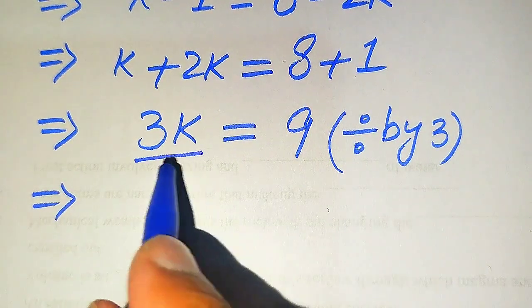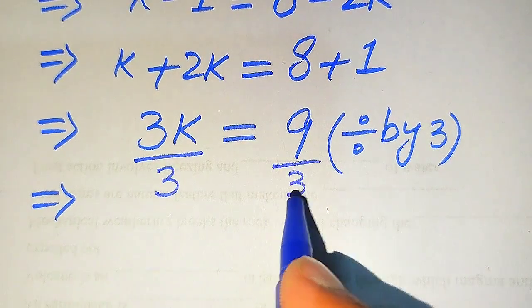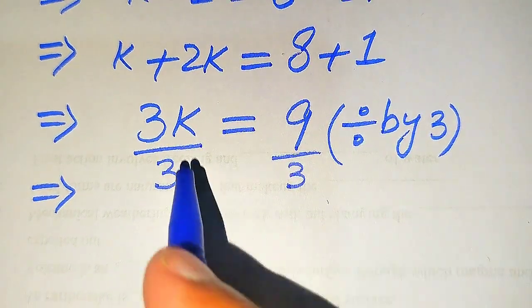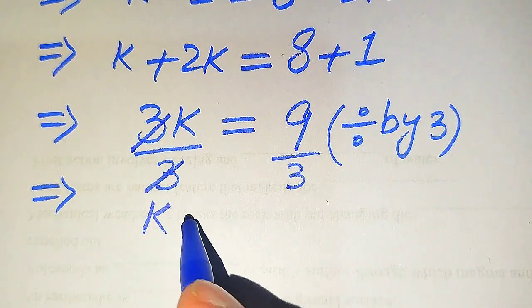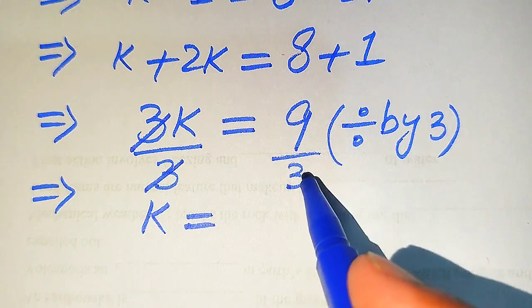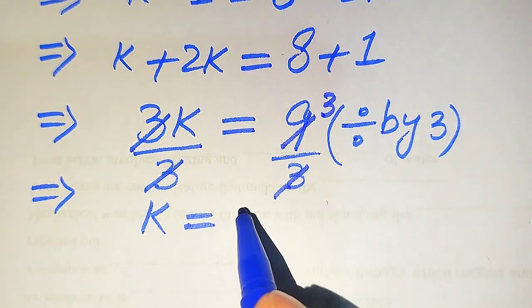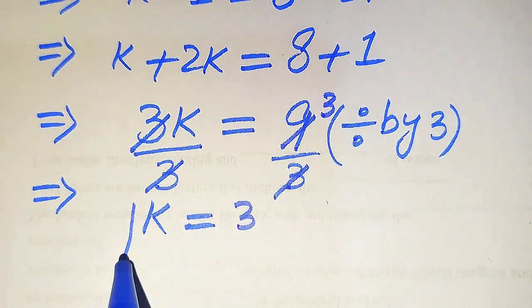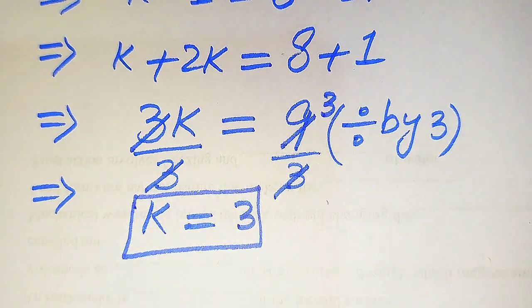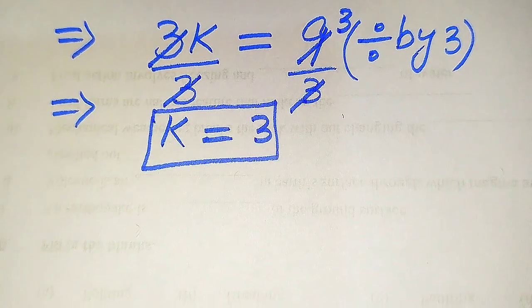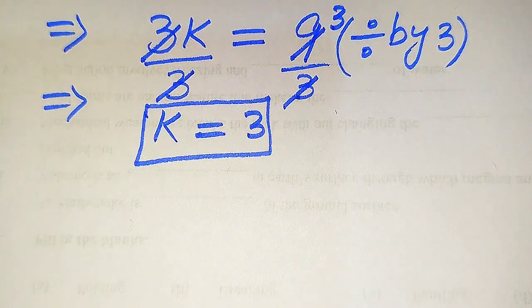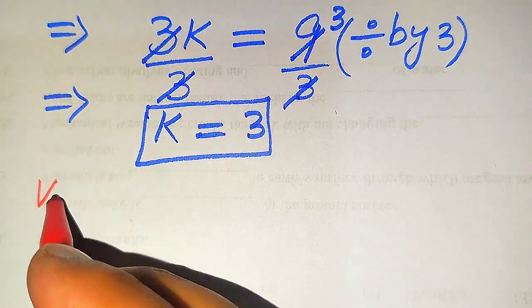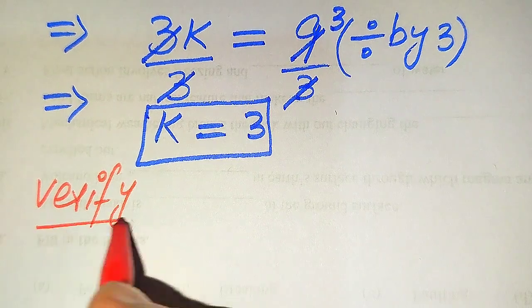After dividing by 3, the 3 cancels on the left side and we get k = 9/3 = 3. So we easily get the value of k equals 3. This is the only root we find. In the next step we need to verify whether this root is a solution of the given equation or an extraneous root.